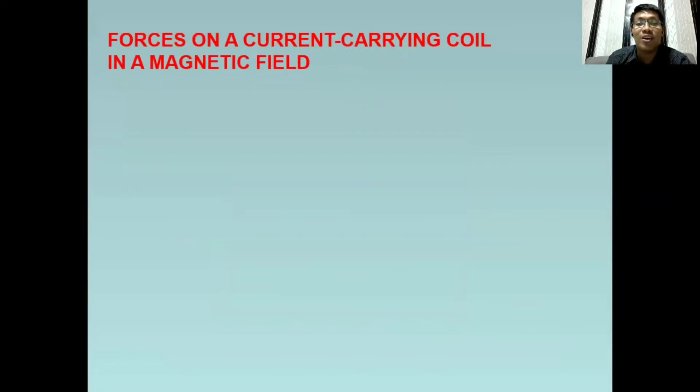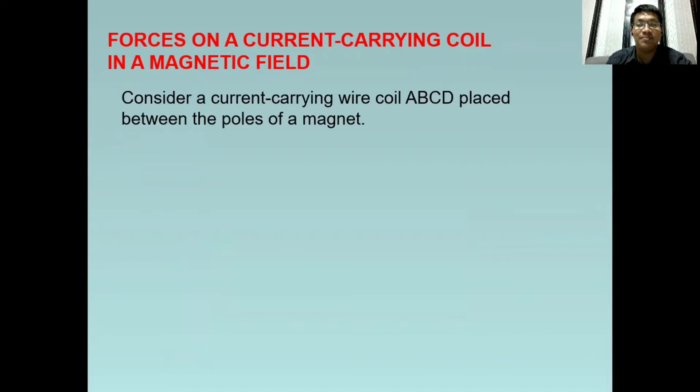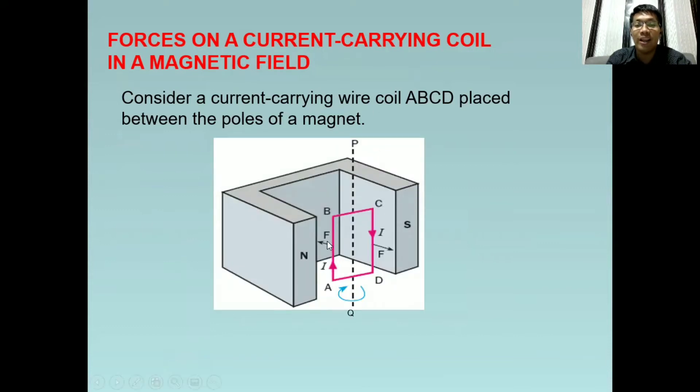This time, let's focus on the forces on a current carrying coil in a magnetic field. We have here a wire coil labeled A, B, C, and D placed between the poles of a magnet. In the coil, we have two sides, and these two sides are always having opposite direction of current, therefore opposite direction of magnetic field. What if it is placed in another magnetic field produced by the magnet?